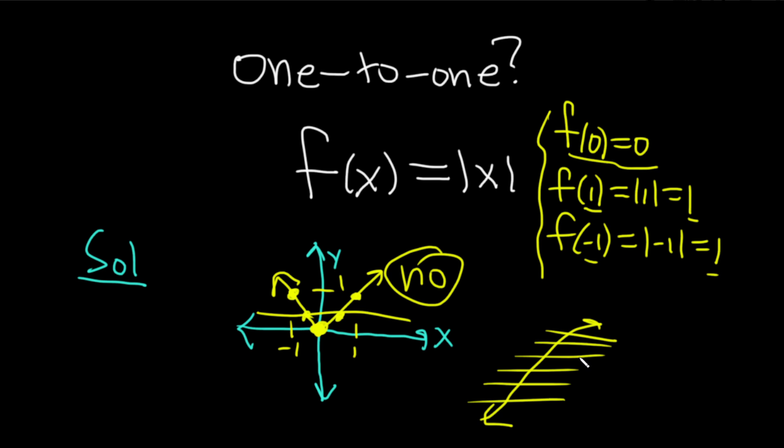In this case, you'll never be able to find one. So this function is actually one-to-one, because you can never find a horizontal line that crosses more than once. Whereas here, as long as you can find one, the answer is no. It's been helpful. Good luck.